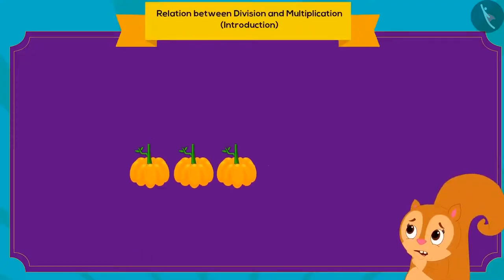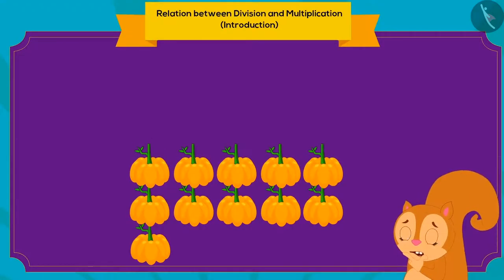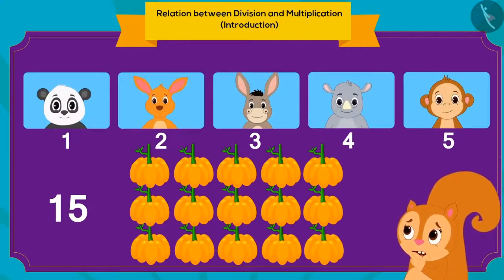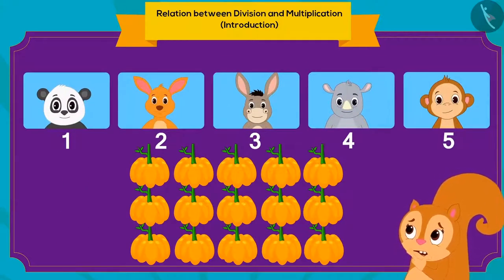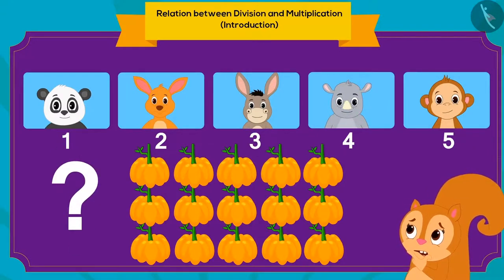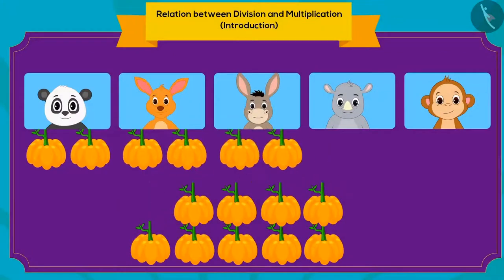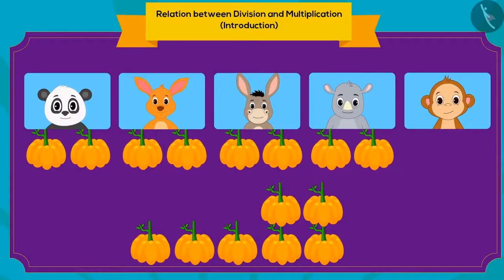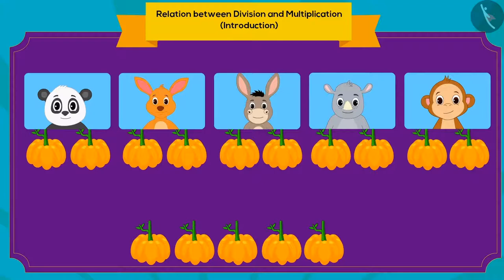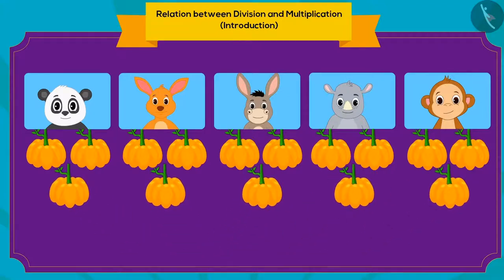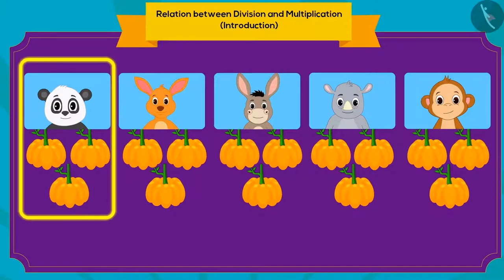Chanda decided to divide the 15 large pumpkins among her five friends equally. Children, can you tell how Chanda will do this? Chanda first gave two pumpkins each to her five friends, then she gave one more pumpkin. Each friend received three pumpkins.